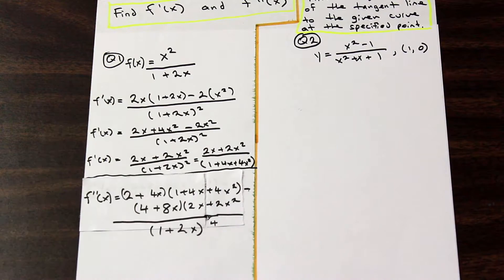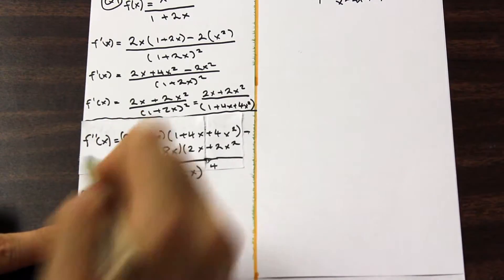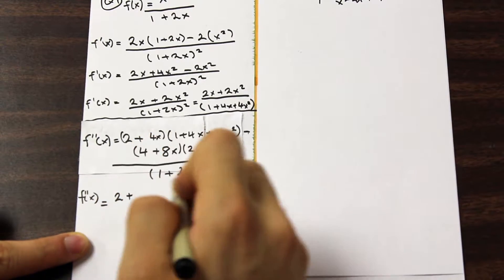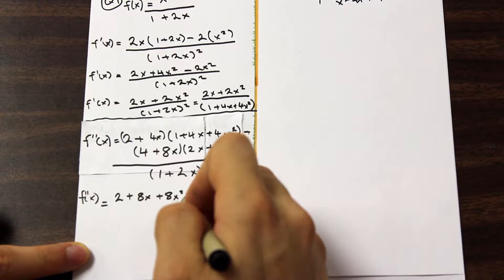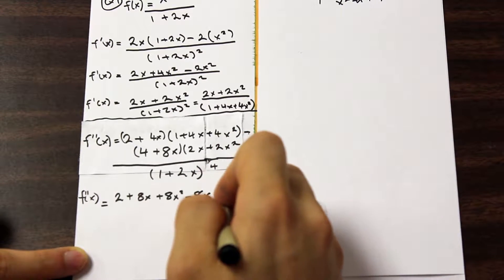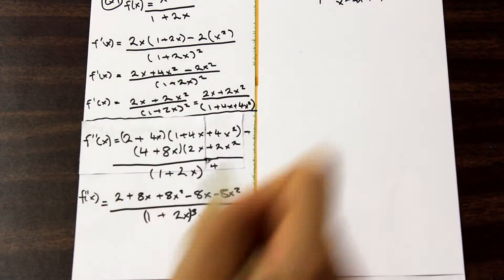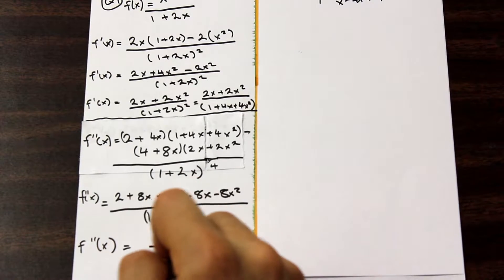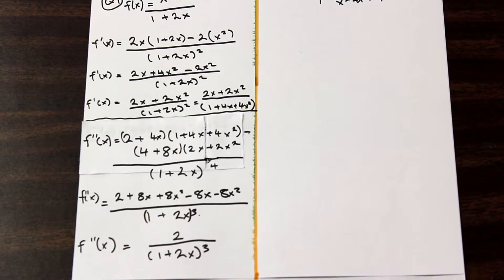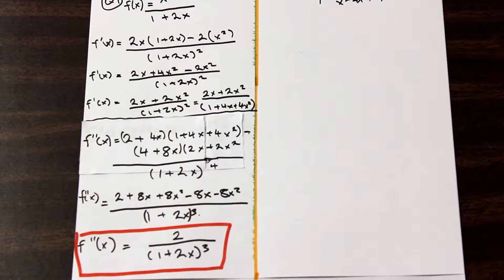I'm going to let you guys expand that — I'm sure you don't want to watch me write it all out — and I'll skip to the more simplified version. Go ahead and expand that on your own; doing it many times, even if it's easy, makes sure you don't make silly mistakes on an exam. If we take it one step further and clean up the top, we're left with 2 over (1 plus 2x) to the power of 3. That is the second derivative, and we are done with that question.